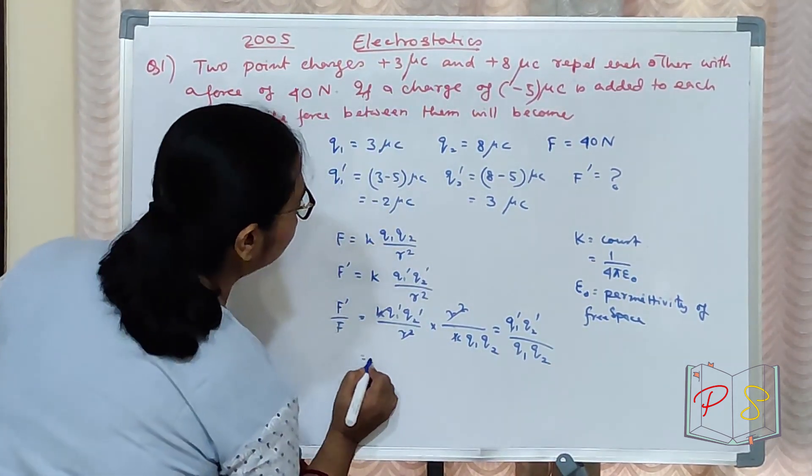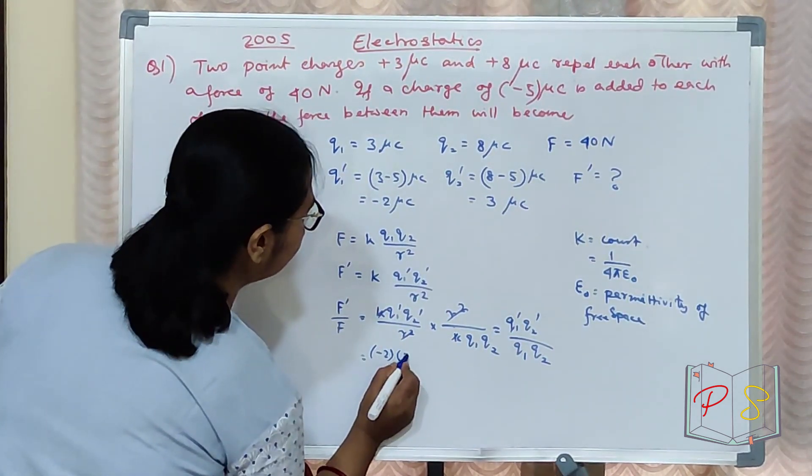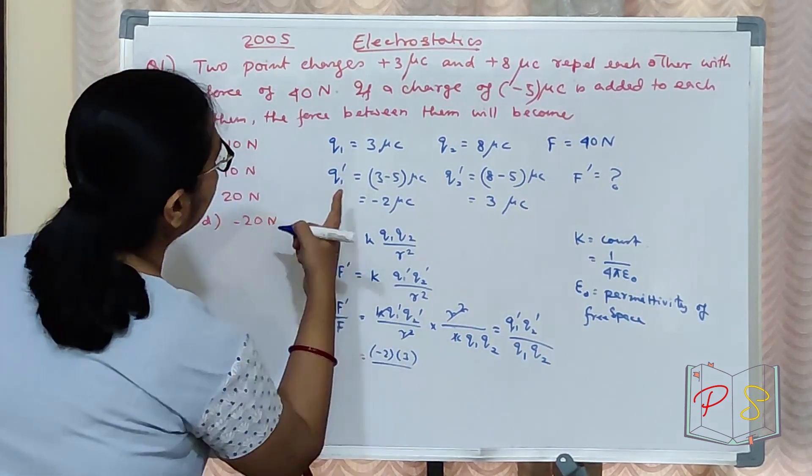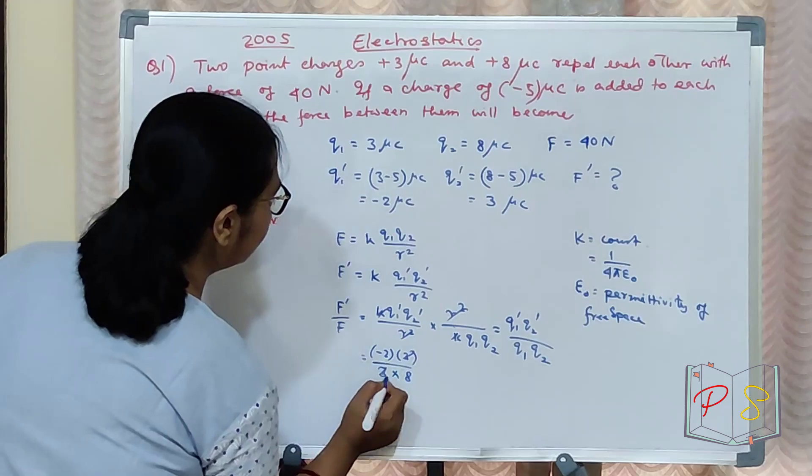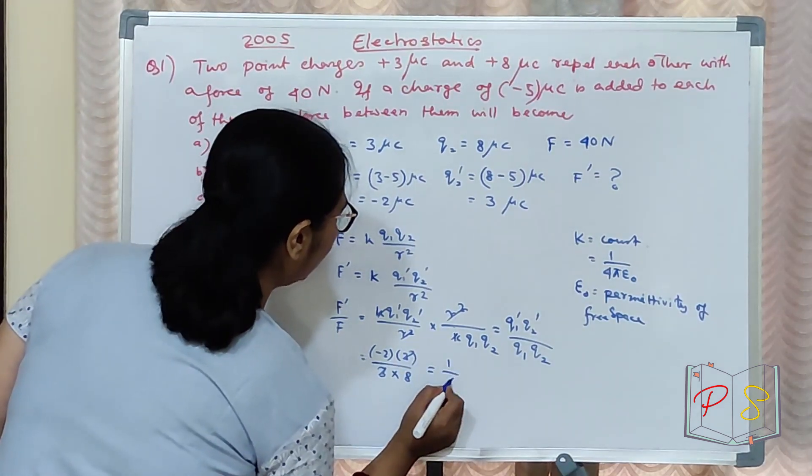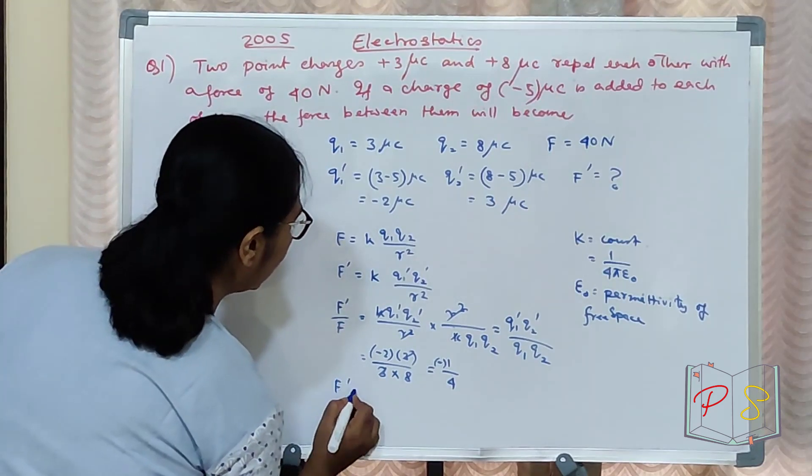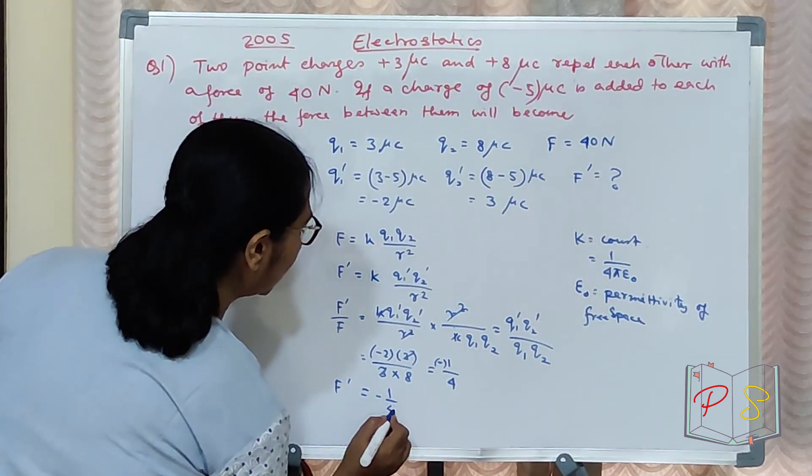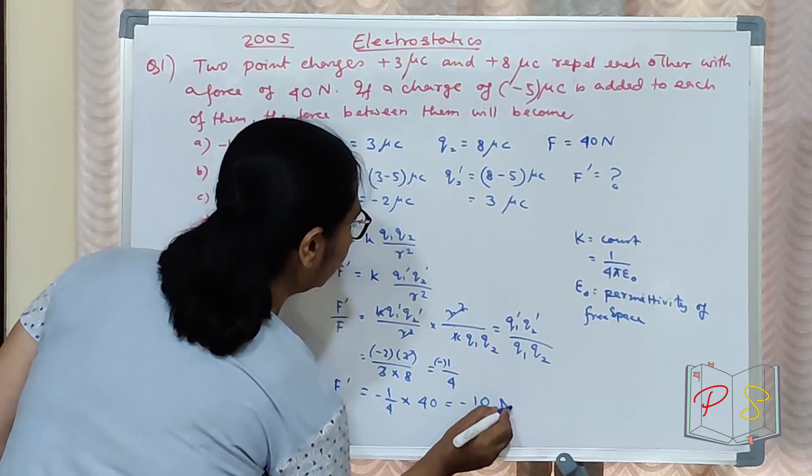Equal to Q1 dash minus 2 into Q2 dash 3 divided by Q1 is 3 into 8. 3 cancels, leaving 1 upon 4 with a negative sign. So F dash equal to minus 1 upon 4 into 40 equal to minus 10 Newton.